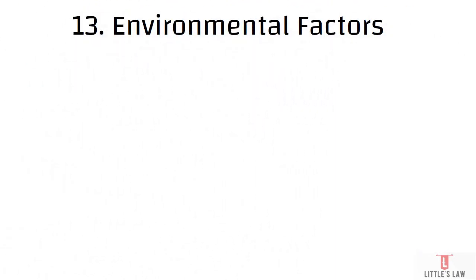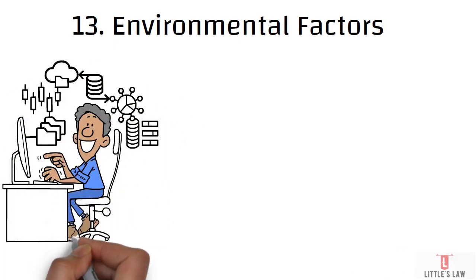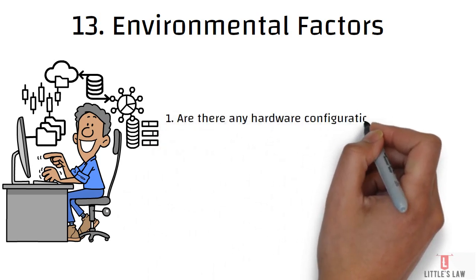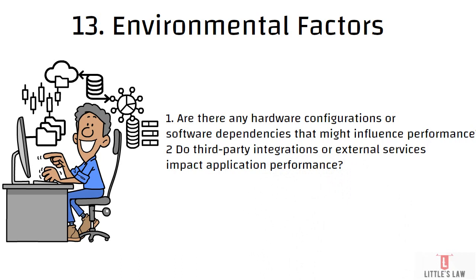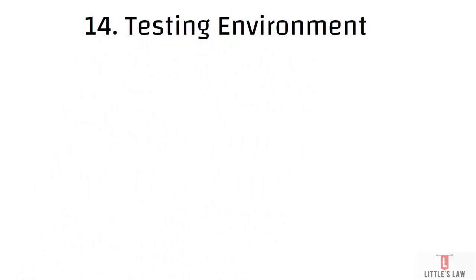The thirteenth question covers environmental factors. Ask about the hardware configuration and software dependencies of your application. Check hardware and software configurations and dependencies, and determine whether the application involves any third-party integrations, such as API calls or external services. This helps clarify whether third-party services are in scope or out of scope, and identifies all relevant hardware and software configuration details.